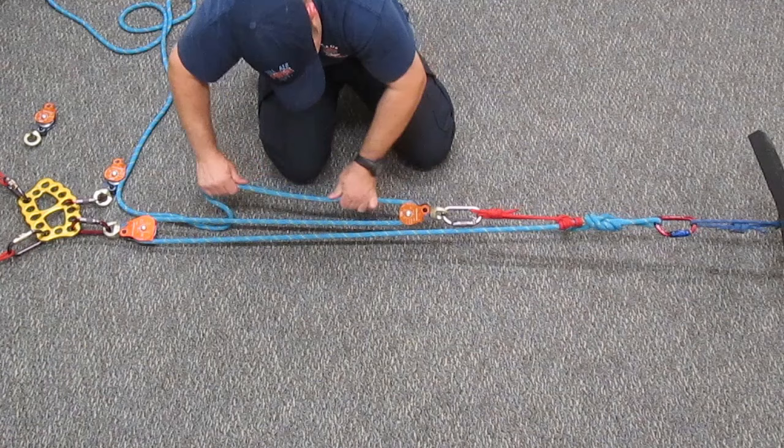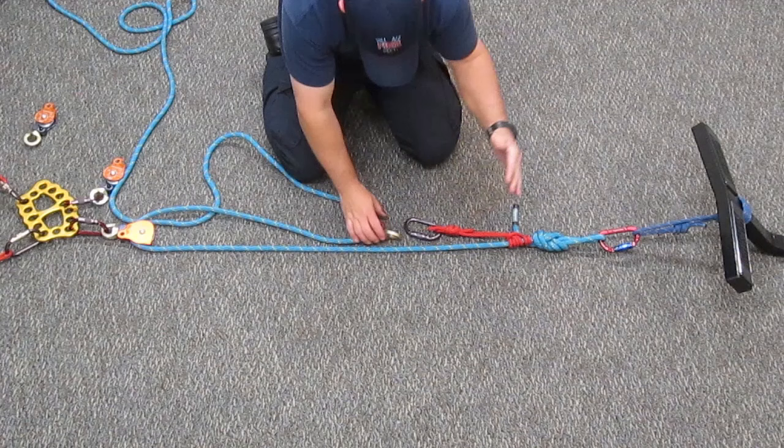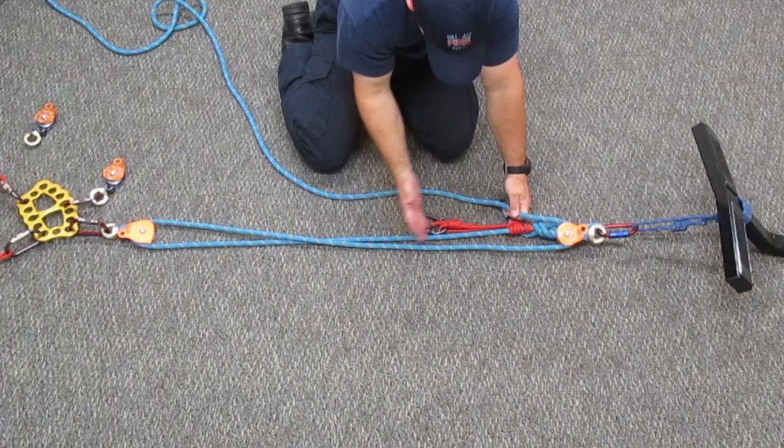We haul on the load and our one unit of tension becomes three at the load. If we don't have to worry about a high directional or a drop off of any kind, we can disregard this rope grab and attach the pulley directly into the load, saving us all that room.